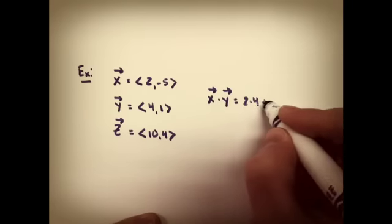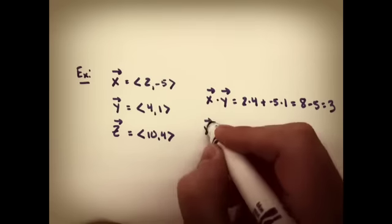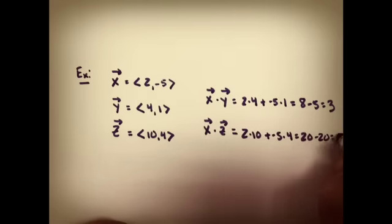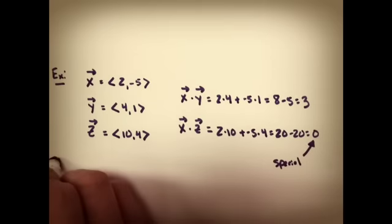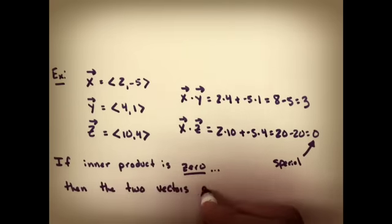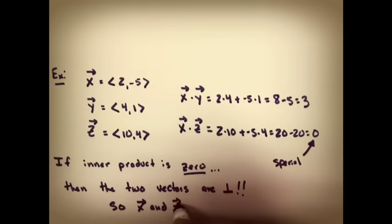First we'll do the inner product of xy. Let you think about it, and you can verify that it's 3. If we do x times z, we see we get 0. Now 0 is a special number. If you get a 0 as a product of your inner products, that means those two vectors were perpendicular.